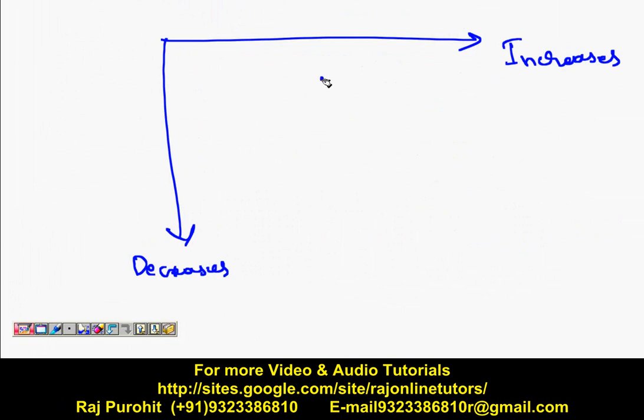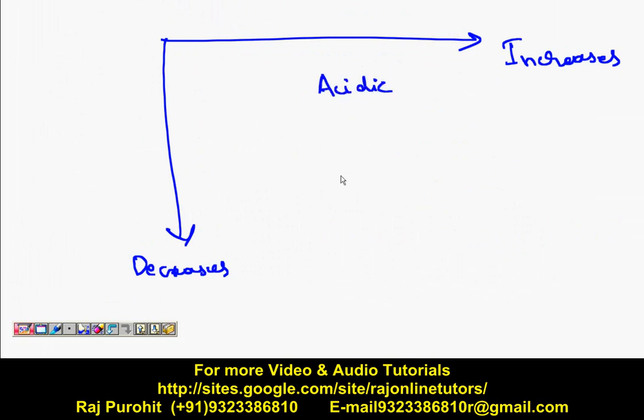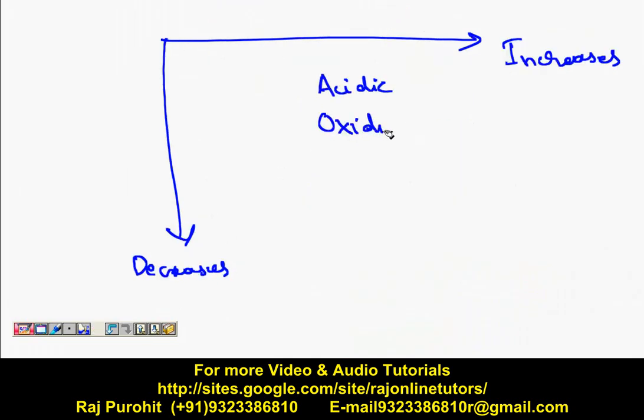Opposite of basic is acidic. Opposite of reducing is oxidizing. Okay there is nothing opposite of atomic size. The last thing is metallic. So opposite of metallic is non-metallic.